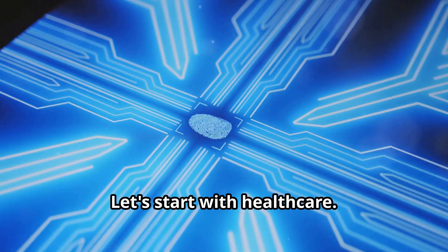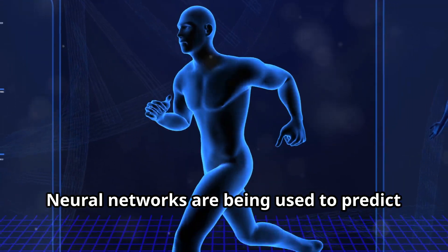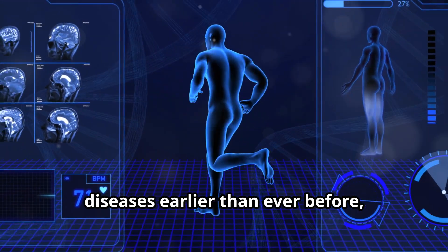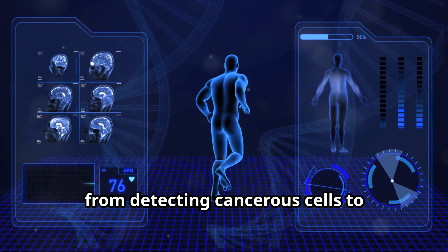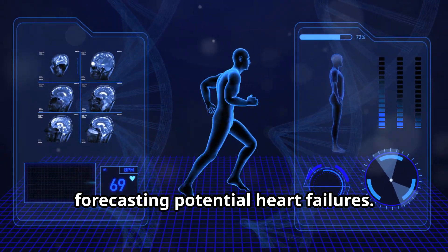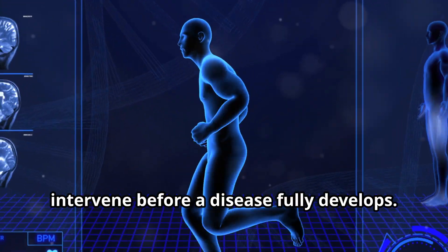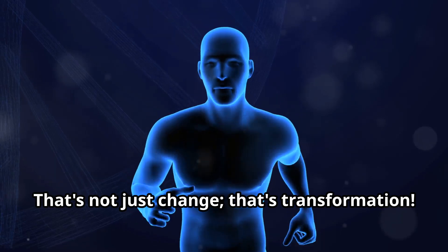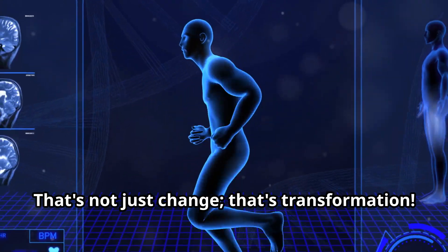Let's start with healthcare. Neural networks are being used to predict diseases earlier than ever before. From detecting cancerous cells to forecasting potential heart failures. Imagine a world where doctors can intervene before a disease fully develops. That's not just change. That's transformation.